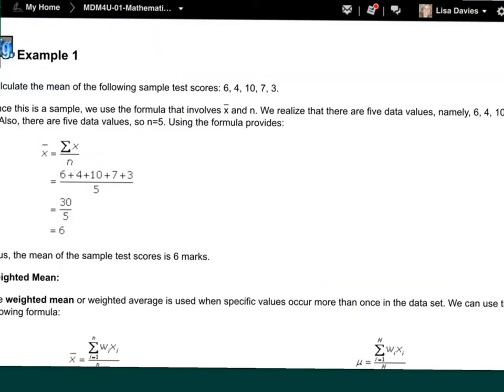So in example one, we're just being asked to find the mean of our sample test scores. And they've given us five scores, five numbers. So we start off by realizing if we have five things that N is equal to five. We just add them up and divide by five and we end up with a mean of six. And in this case, we're told in the question that this is a sample. And so we're using x bar and little n in our formula to show that we know we're working with a sample.